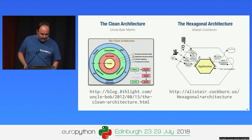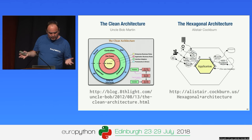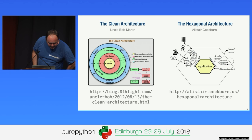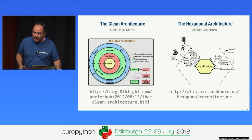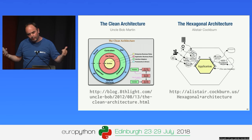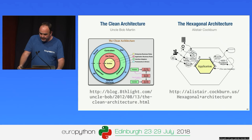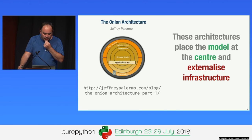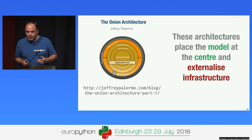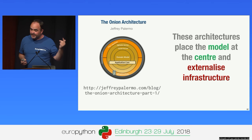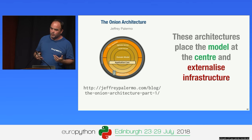People have been talking about the alternatives for a very long time. Bob Martin talks about the clean architecture — notice in the middle he has entities and around that use cases, and in the outside ring, the database is on the outside, not in the middle underneath everything else. Alistair Cockburn proposed the hexagonal architecture with ports and adapters — again, the database is on the outside. My favorite is Jeffrey Palamo's Onion Architecture: domain model in the center, then domain services, application services, user interface, and infrastructure on the outside. This approach is called externalizing the infrastructure — it places the model at the center.